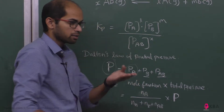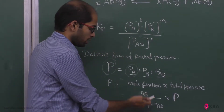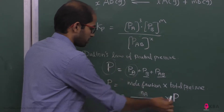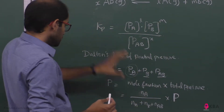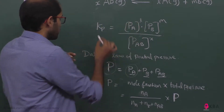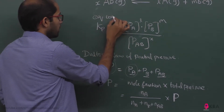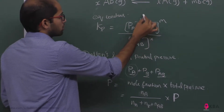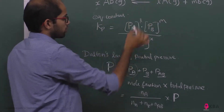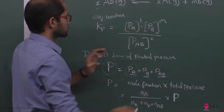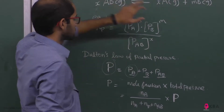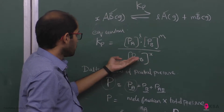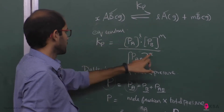Mole fraction equals NA divided by total number of moles, into total pressure P. The equilibrium constant Kp equals partial pressure of A raised to the stoichiometric coefficient, times partial pressure of B raised to power M, divided by partial pressure of AB raised to power X. Products divided by reactants, with L moles and M moles respectively.